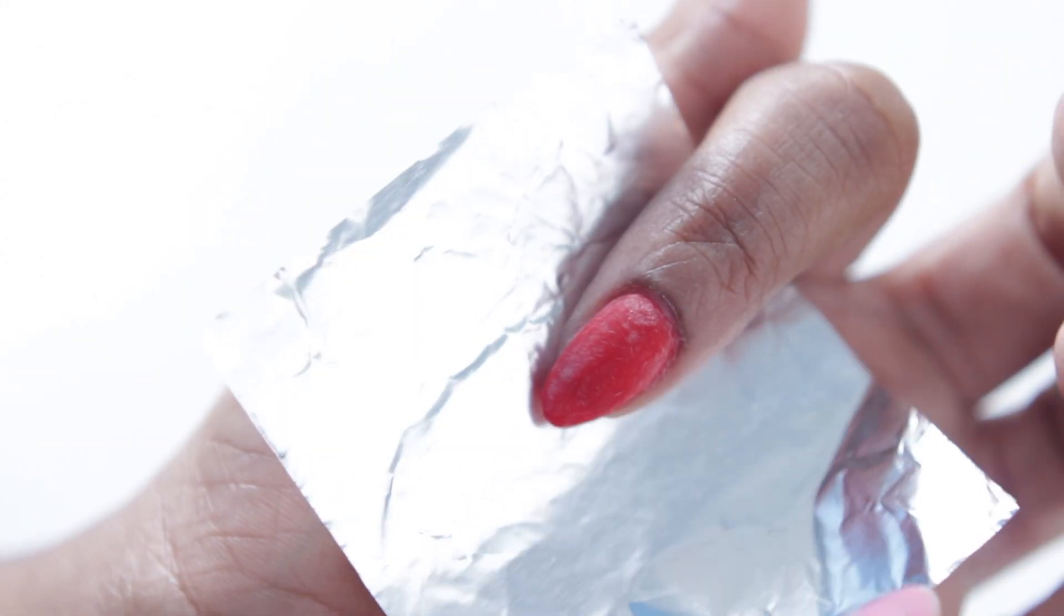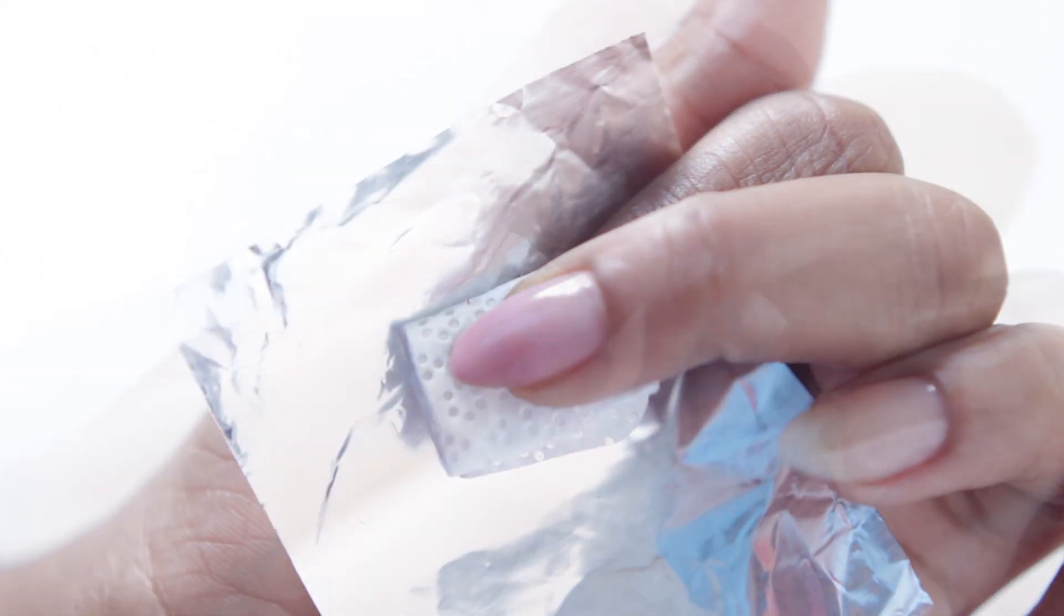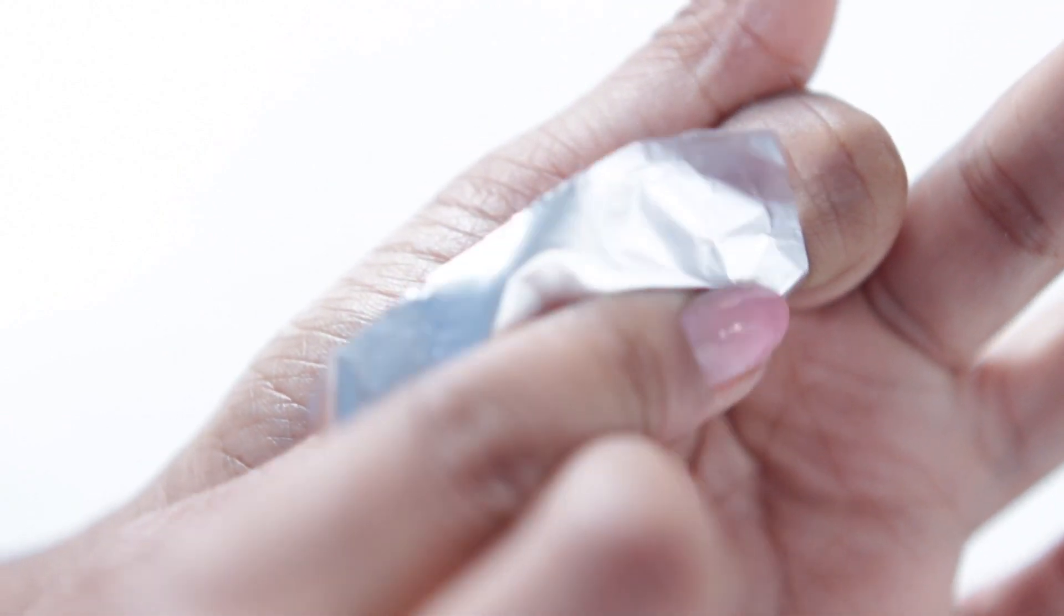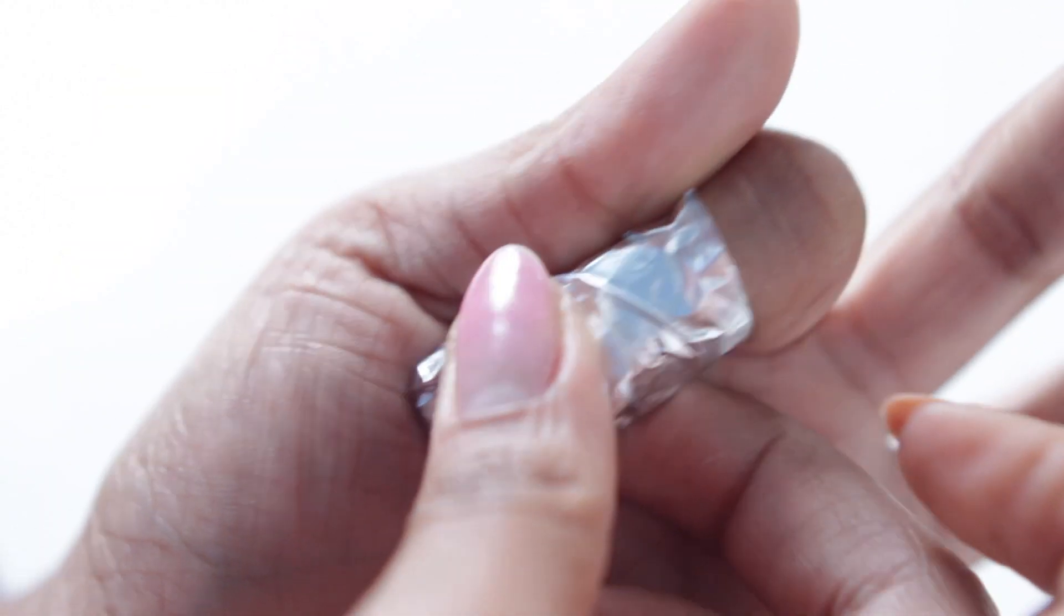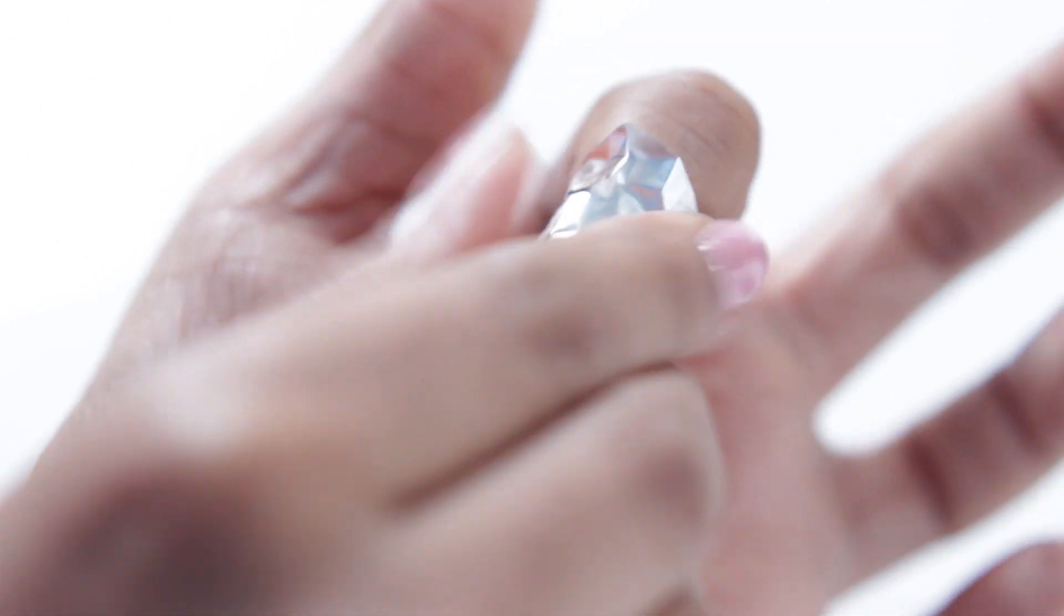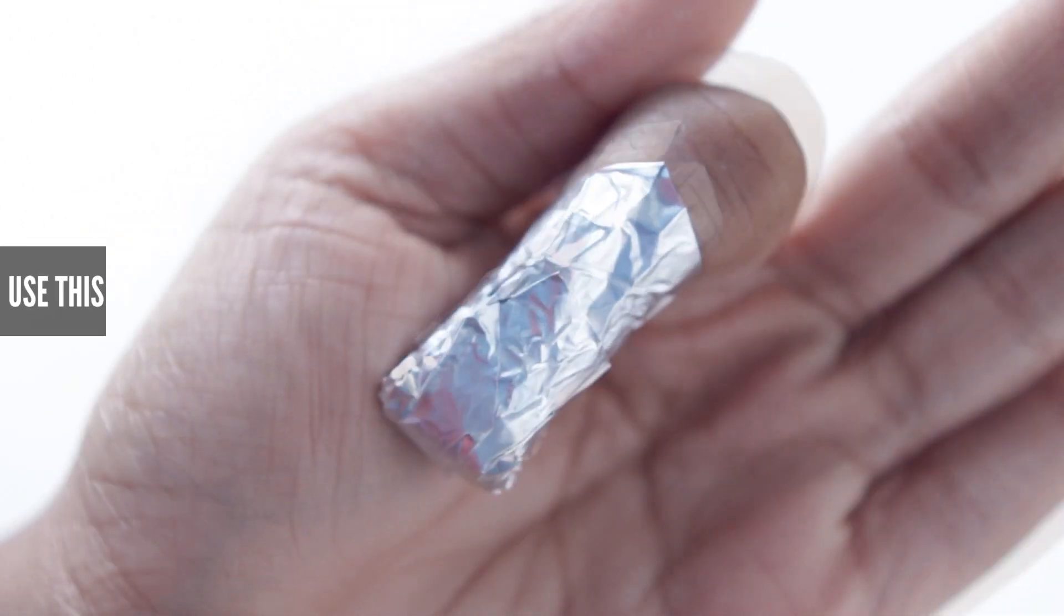Then you just want to apply your aluminum foil making sure that it's shiny side up and apply your cotton pad saturated in either acetone or you can use the remover that comes with the brand that you're using. But the most important step is to make sure that this fits very snug otherwise the liquid is going to evaporate.